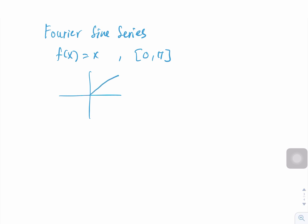We know that f(x) should be an odd function for the Fourier sine series. To be an odd function, it must be symmetrical about the origin, so the extension goes from π to negative π. Since f(x) is odd, a₀ equals zero and aₙ equals zero, so we only need to find bₙ.